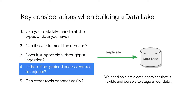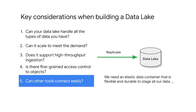Four: is there fine-grained access control to objects? Do users need to seek within a file, or is it enough to get a file as a whole? Cloud storage is blob storage, so you might need to think about the granularity of what you store. And fifth: can other tools connect easily? How do they access the store? Don't lose sight of the fact that the purpose of a data lake is to make data accessible for analytics.